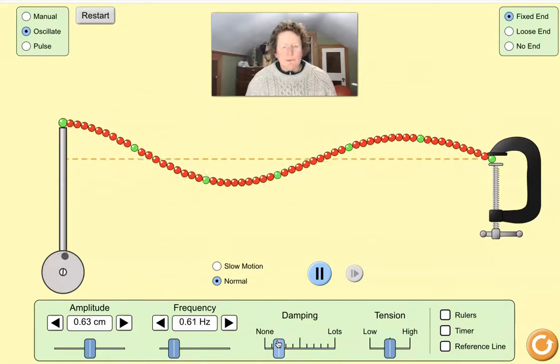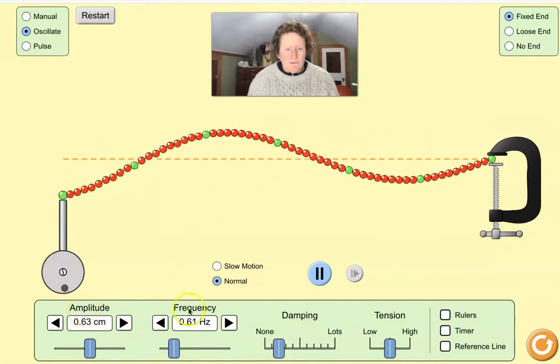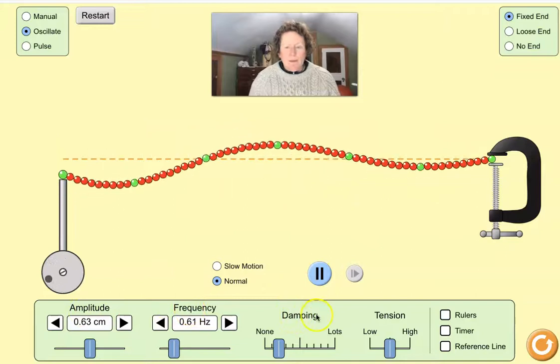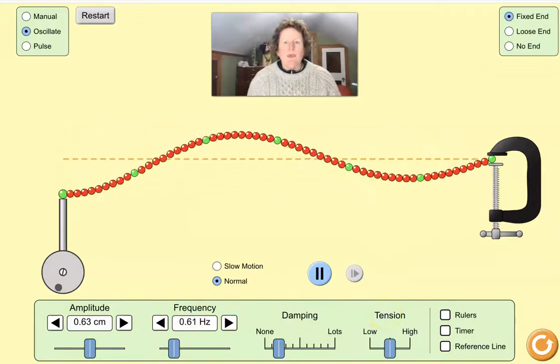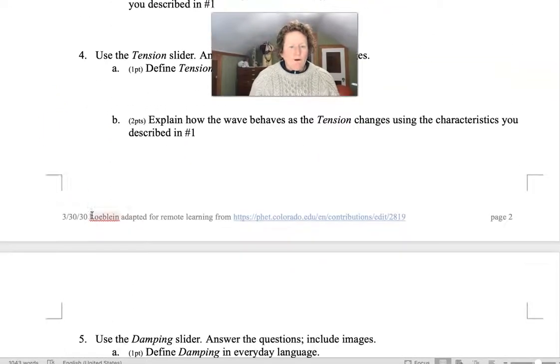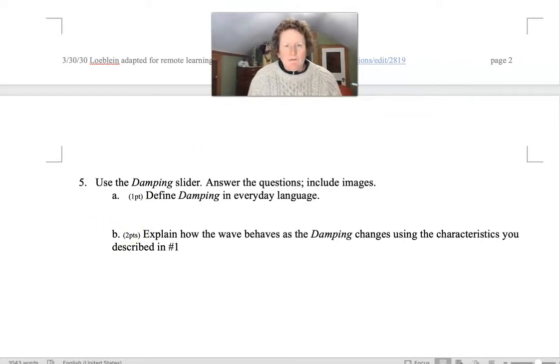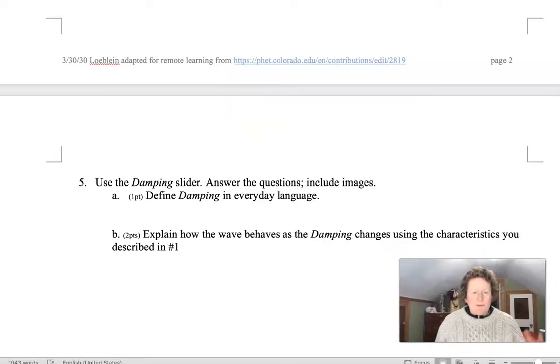There you go. So you can see how these four factors, amplitude, frequency, damping, and tension, change waves. It's your job in questions 2, 3, 4, 5, and 6 to define the term in everyday language. For example, you could say like amplitude describes the height of a wave. How tall the wave is.